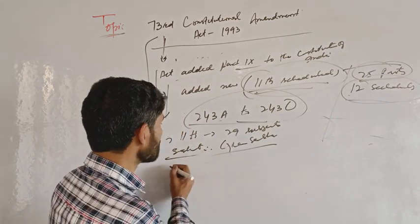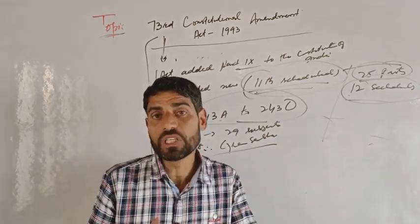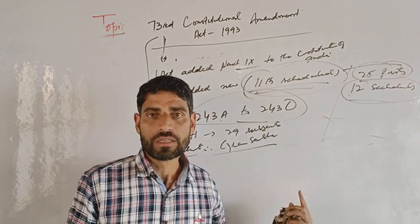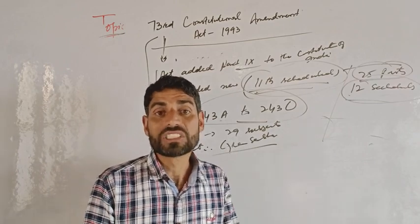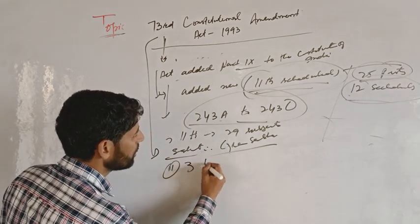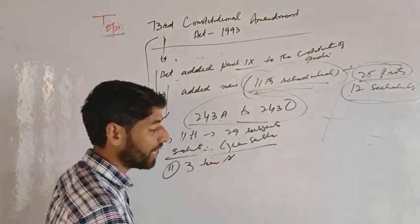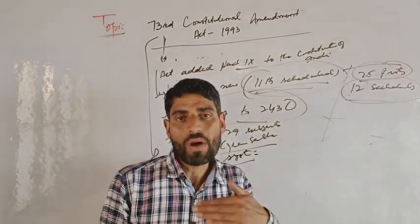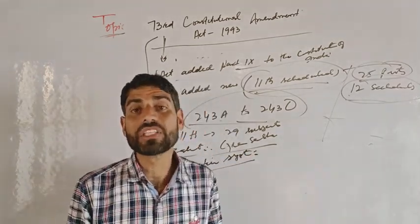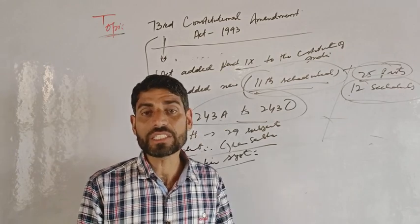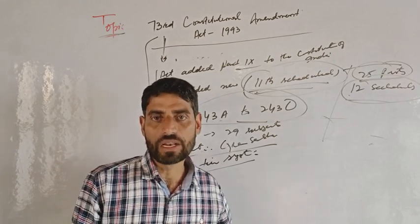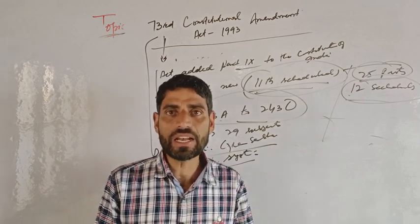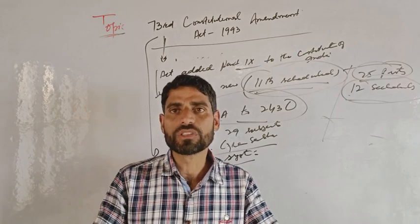A second important feature of the 73rd Constitutional Amendment Act is that it provides for a three-tier system of Panchayati Raj in every state — at the village level, intermediate (block) level, and district level.